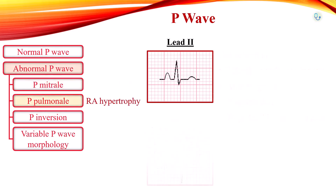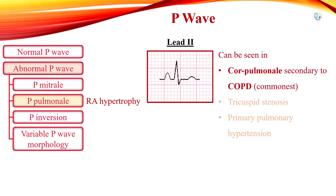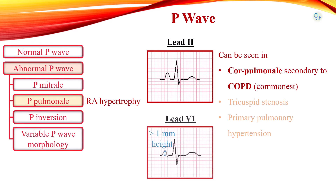Tall and peaked P waves in lead 2 is a feature of right atrial hypertrophy, usually due to pulmonary hypertension — for example, cor pulmonale secondary to chronic obstructive pulmonary disease. In V1, right atrial hypertrophy causes increased height, more than 1.5 mm, of the initial positive deflection of the P wave.